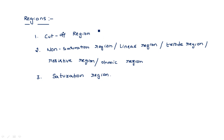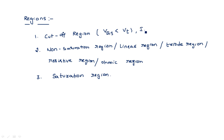The cutoff region occurs when the input voltage VGS is less than VT. If the threshold voltage is not met from the input side, the transistor remains in the cutoff region, and no current flows — IDS is equal to zero.